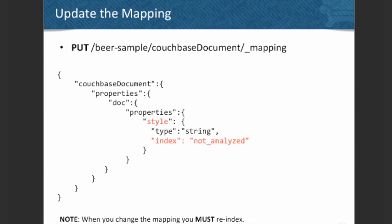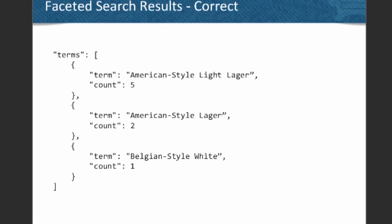To fix that, we can update the mapping. It has a default mapping, but we want to override it. It's as simple as doing a PUT request to the URL for the beer sample index for Couchbase documents, overriding the behavior for the field called 'style' and setting 'index: not_analyzed'. There are other values you could choose, but 'not_analyzed' gives us the behavior we're looking for. Important to note: when you change the mapping, you do need to re-index your data, so you want to figure out the right mapping during development. Running the same faceted query after that change, the results now look as expected: 'American style light lager' has five, 'American style lager' has two, and 'Belgian style white' has one.